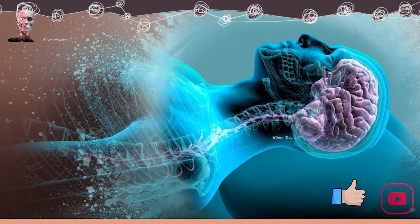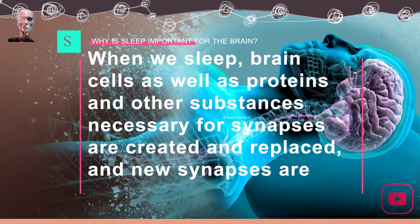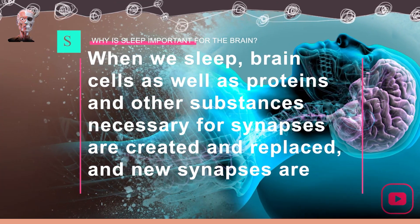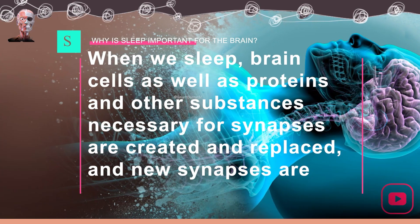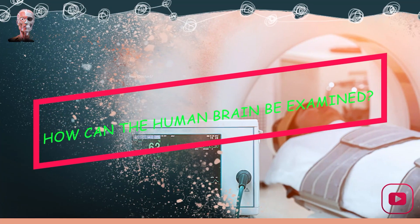Sleeping is, however, even more important for the nervous system. When we sleep, brain cells as well as proteins and other substances necessary for synapses are created and replaced, and new synapses are formed. How can the human brain be examined?